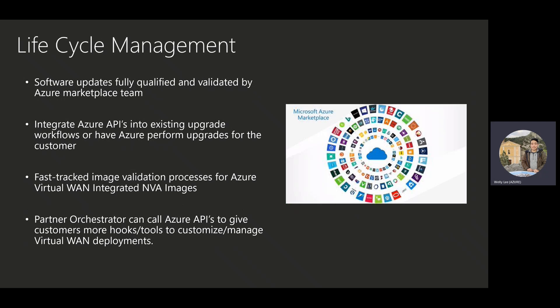We also wanted to handle lifecycle management, so we made sure that software updates are fully qualified and validated by the Azure Marketplace team. When your favorite vendor comes out with a new version, it goes through Marketplace where we run security, performance, and other tests to make sure everything is good to go. Partners can integrate Azure APIs into their existing upgrade workflows through the orchestrator, or have Azure perform upgrades for the customer. We also fast-track image validation processes for Azure Virtual WAN integrated NVA images to make sure customers get access to the newest software as soon as possible. We also have additional features built into our APIs that the partner orchestrator can call to give customers more hooks and tools to customize and manage their Virtual WAN deployments.